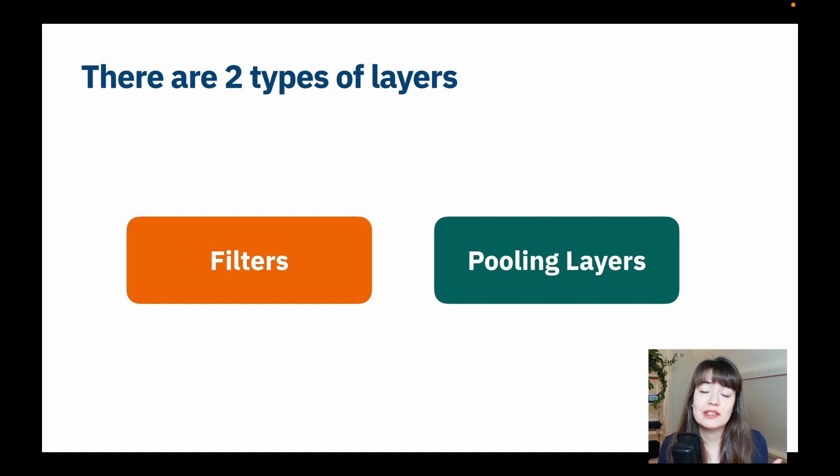So there are two different types of things that you can pass through an image with CNNs. One of them is called the pooling layers, and the other one is called filters. First, we will see how filters work, and then we will see how pooling layers work.